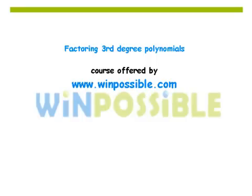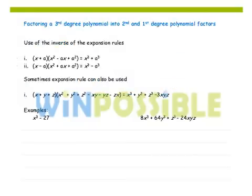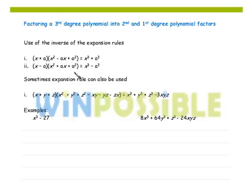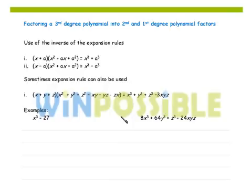This last section is a little bit trickier. Here we'll be factoring third degree polynomials into first and second degree polynomial factors. The first two rules say that if I have the sum or difference of two perfect cubes, I can factor these third degree binomials. The last rule says that if I have the sum of three perfect cubes minus three times the cube root of those three perfect cubes, I can use a general formula to factor it. I'm going to work through some examples.